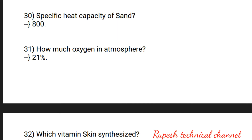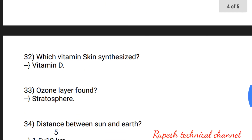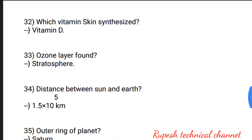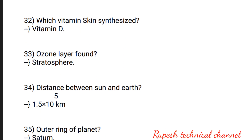Question number 29: main chemical destroying the ozone layer — chlorofluorocarbon, symbol CFC. Question number 30: specific heat capacity of sand — 800. Question number 31: how much oxygen is in the atmosphere? — 21 percent.